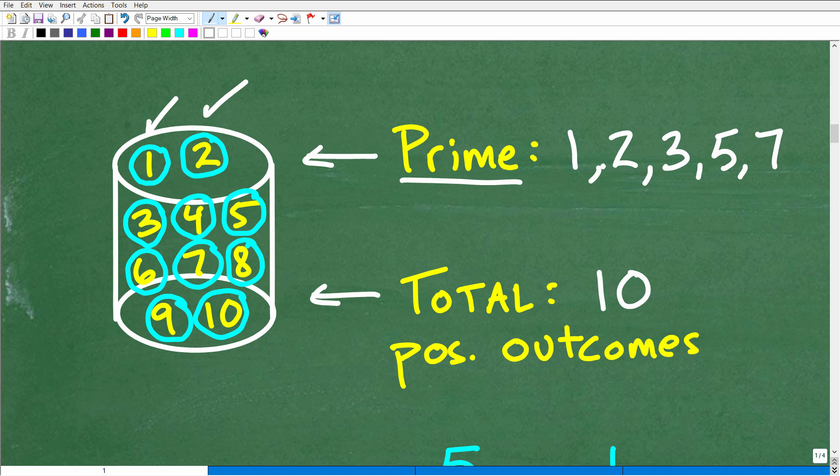2 is also prime. Remember, prime is a number with the only factors where it's just the number and 1. So 1, 2, prime number. 3 is a prime number. 5 is a prime number. 7 is a prime number as well. So how many prime numbers do we have? We have 1, 2, 3, 4, 5. We have 5 prime numbers.